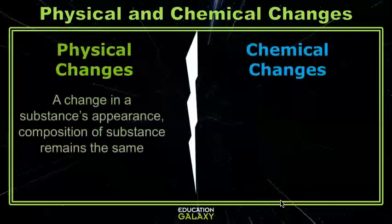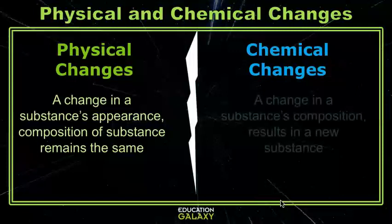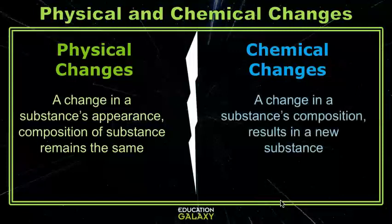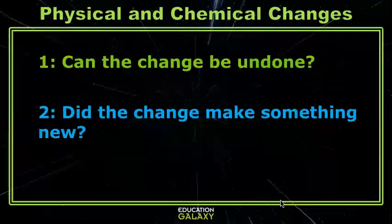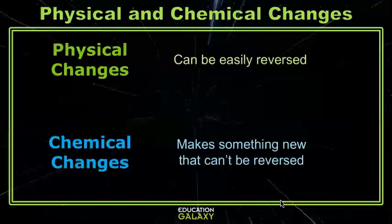Physical changes are what happens when something's appearance changes but the composition stays the same, while chemical changes are when something's composition changes and something new is made. You're probably wondering what that means. The easiest way to think about it is to ask yourself two questions: Can I undo this? And was something completely new made? Physical changes can all be reversed or undone. With chemical changes, something new is always made and it cannot be reversed or undone.